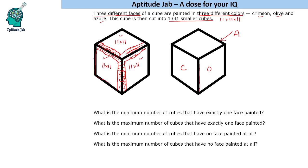After removing one border from each relevant dimension, each face is left with 10×10 because we removed one from this dimension and one from this dimension. So the total is 100 plus 100 plus 100, giving 300 cubes that have exactly one face painted. This is the minimum number.